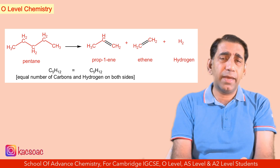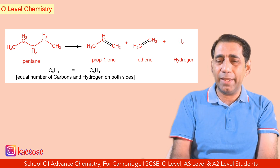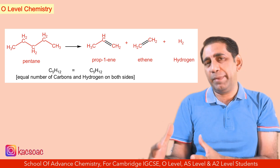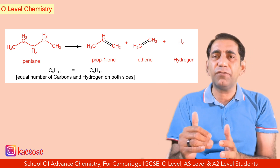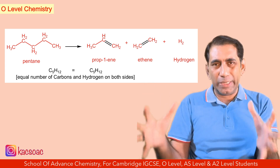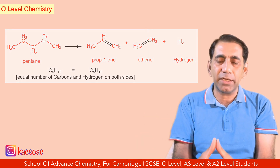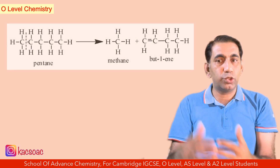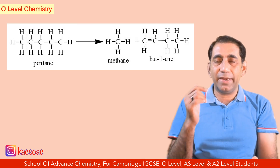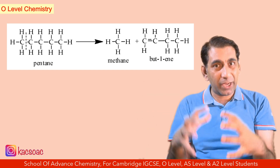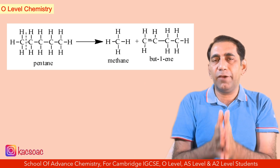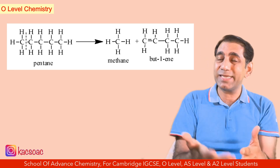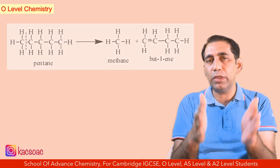You can write the equation for cracking of any hydrocarbon, any large molecule. The basic rule for cracking is: there is no increase in carbon atoms, no addition of hydrogen atoms, and no loss of hydrogen or carbon atoms. The total sum of the fractions has equal mass, equal number of carbon atoms, and equal number of hydrogen atoms as the original large molecule. For example, pentane is C5H12 — the sum of methane and butene equals C5H12. Nothing is lost, nothing is added.